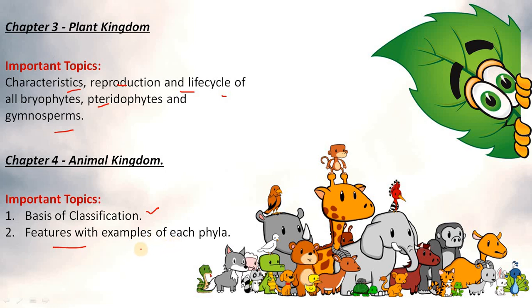Preparation tips for Unit 1: One must know the basic features of all five kingdom classification. The characteristics of bryophytes, pteridophytes and gymnosperms are frequently asked questions. The life cycles of them are very much important. The basis of classification, features and examples of all phyla are important.